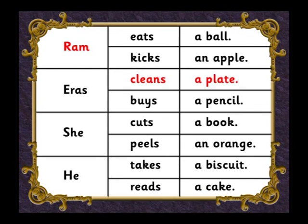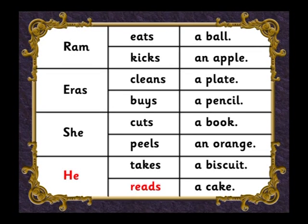Ram cleans a plate. Airas buys an apple. She peels an orange. He reads a book. You can make more sentences using this table. Write them in your notebooks and show them to me.